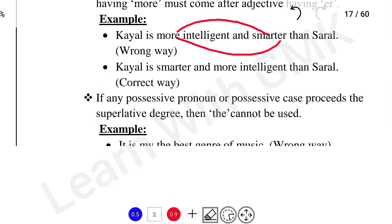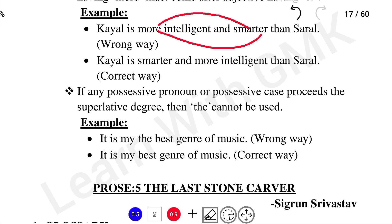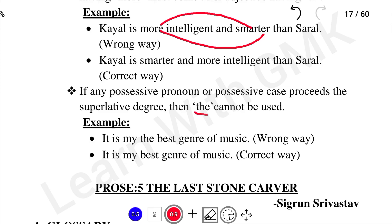Format 3: If any possessive pronoun or possessive case precedes the superlative degree, then 'the' cannot be used. If there is a possessive pronoun before a superlative degree, they cannot be used together. For example, 'It is my best genre of music' — here 'my' is the possessive pronoun, so we do not use 'the' before 'best.' This is the rule for superlative degree with possessive pronouns.